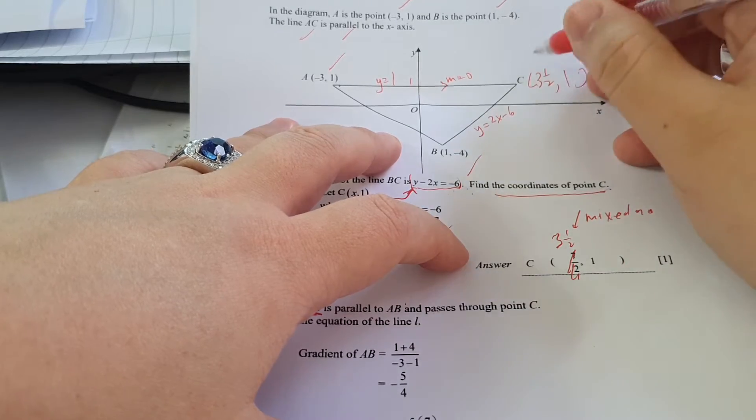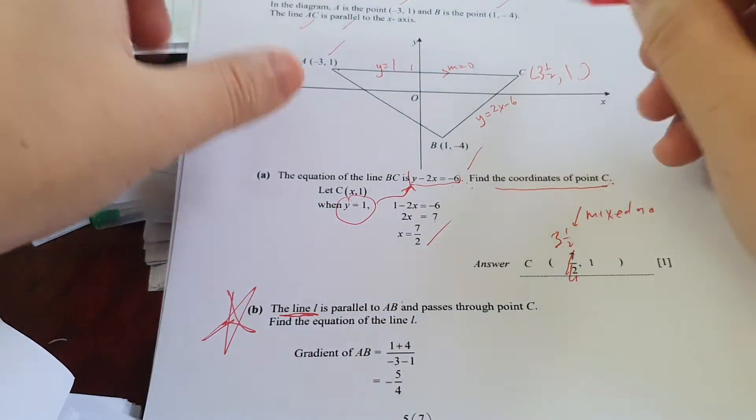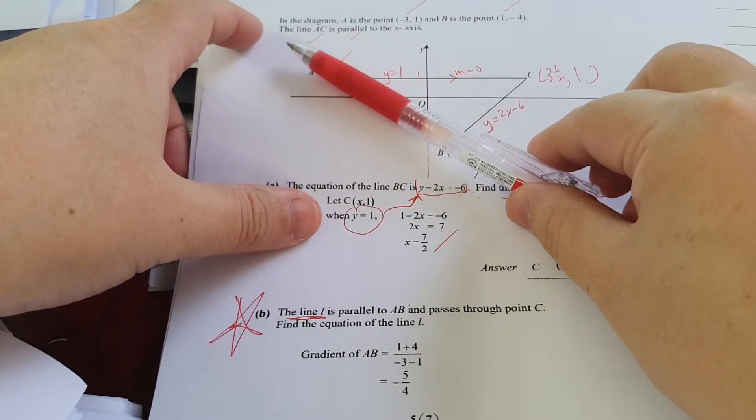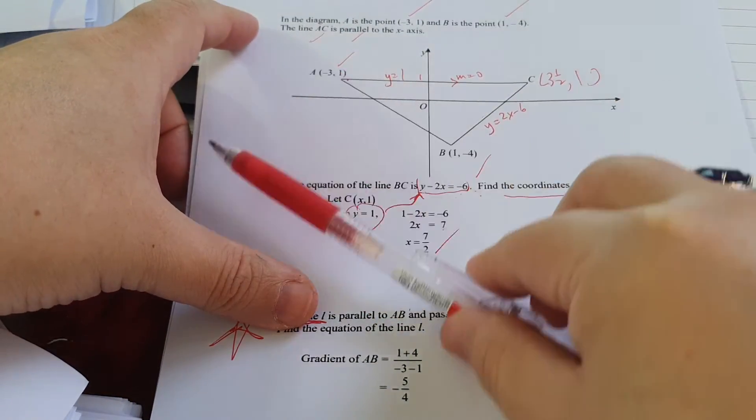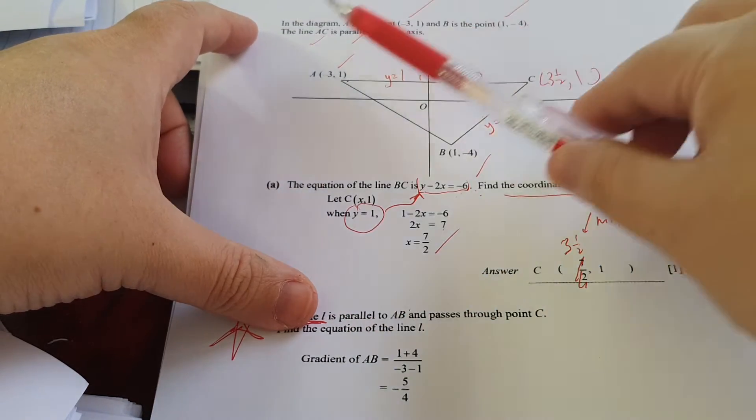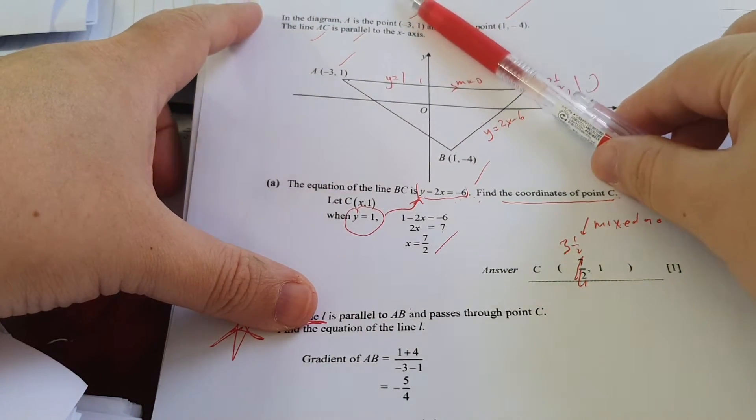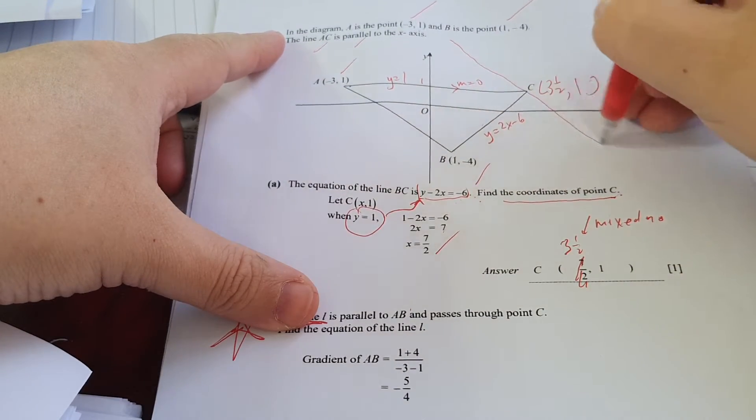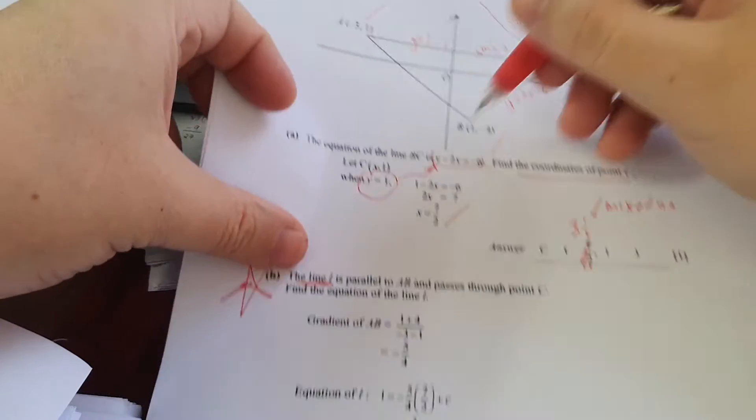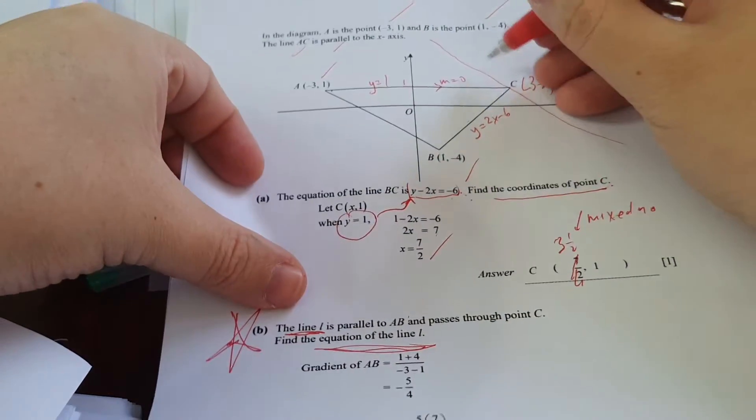You must update the diagram, like in trigonometry, in coordinate geometry, everything also must update. Then you will know that there's a line that's parallel to this AB. That means parallel, but it's not any line. It is a line passing through C, so it is this line. They want you to find equation of this line L. This is L.